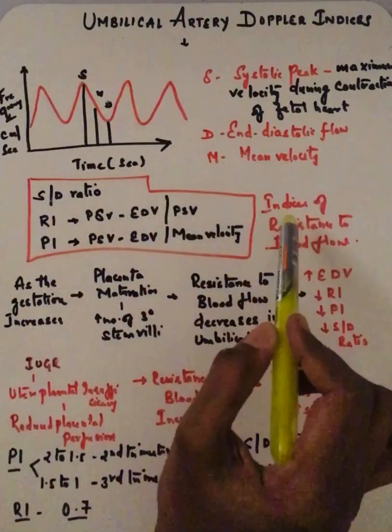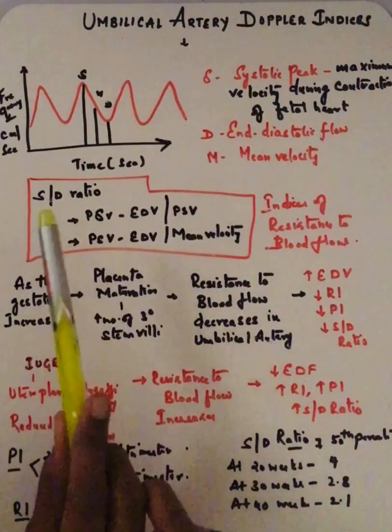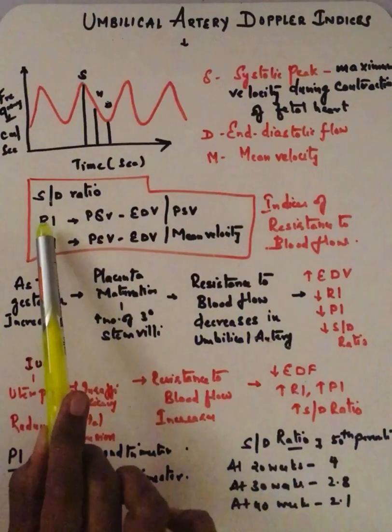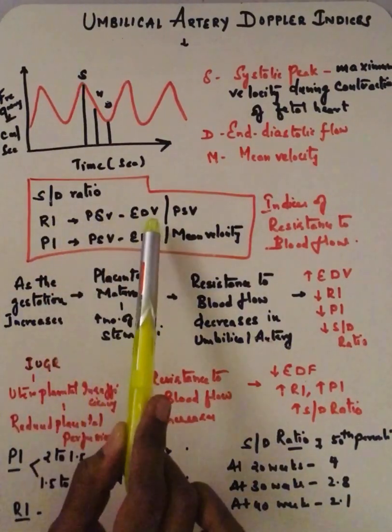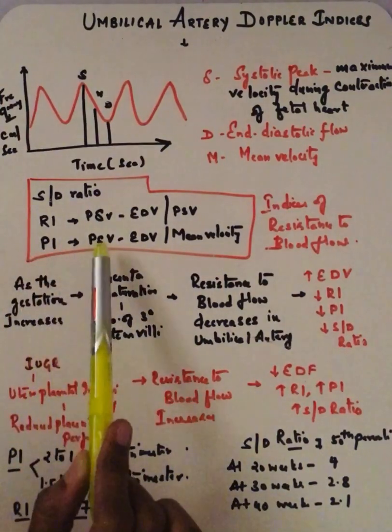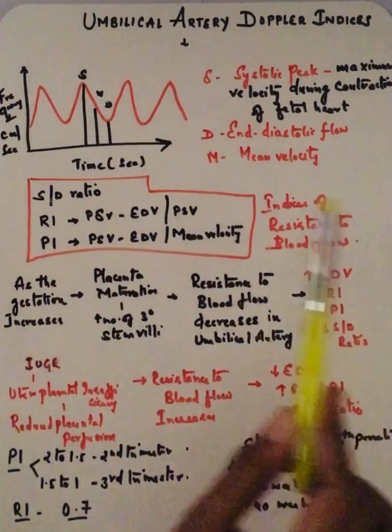It depends upon the placental vascular resistance. M is the mean velocity. So these are all the indices: S/D ratio (systolic by diastolic ratio), or resistive index (RI)—peak systolic velocity minus end-diastolic velocity by peak systolic velocity—and pulsatility index (PI)—peak systolic velocity minus end-diastolic velocity by mean velocity.